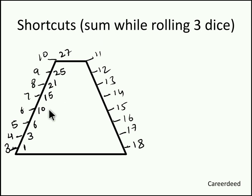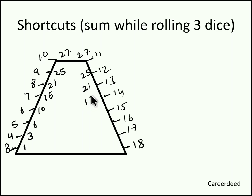Write the same numbers in descending order from sum 11 to 18: sum 11 occurs 27 times, sum 12 occurs 25 times, sum 13 occurs 21 times, sum 14 occurs 15 times, sum 15 occurs 10 times, sum 16 occurs 6 times, sum 17 occurs 3 times, and sum 18 occurs 1 time.